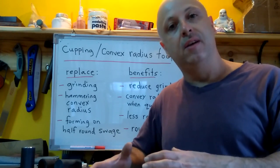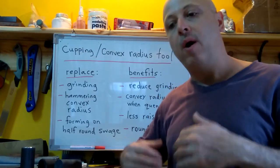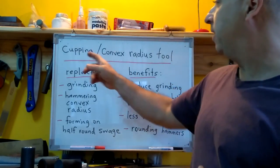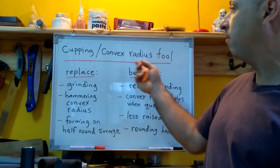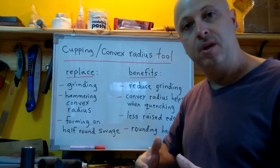What I want to do today is make another tool that I need, basically a cupping tool or what I've written here is a convex radius tool. Basically when I make hammers I need to be able to radius the face.